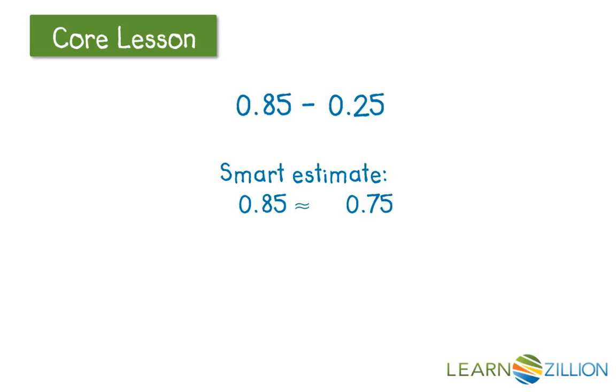So for 85 hundredths, I'm going to round to 75 hundredths. And for 25 hundredths, it's actually equal to 25 hundredths. So I'm going to say that 75 hundredths minus 25 hundredths is going to give me an estimate that's a little more than 50 hundredths.